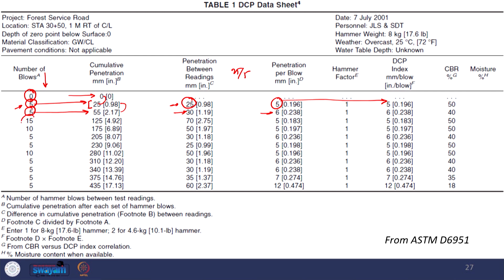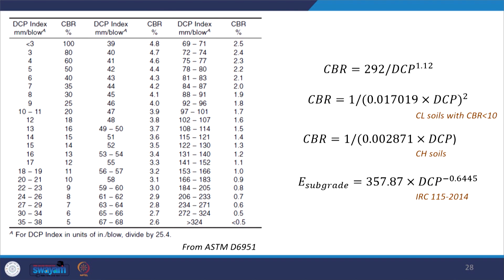Then you record the reading after 15 more blows. The first reading was after 5 blows, the second after 5 additional blows, and then you give 15 additional blows before recording. Let us say after 15 blows the cumulative reading is 125; the individual reading is 125 minus 55 = 70, and the DCP value becomes 70 divided by 15 = 5 mm per blow. Likewise, you continue all further calculations until the test is completed — usually once the entire length of the DCP machine is penetrated into the soil sample.